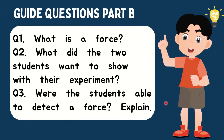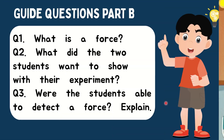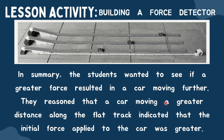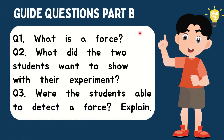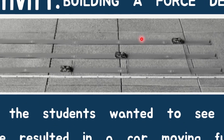For guide question part B — what is force? Force is an influence or interaction that causes an object to change its velocity; it is either a push or a pull. The two students wanted to show that a force acting on an object must exist even if you cannot see it with the naked eye, and their result showed that greater force resulted in a car moving further. Were the students able to detect a force? Yes — if a force exists, it will cause the cars to move, and all three identical cars moved. Therefore, the results show that force exists.